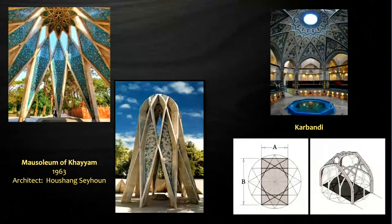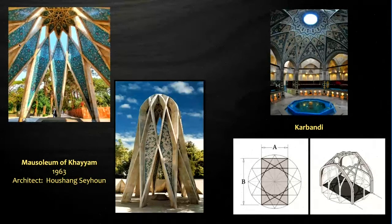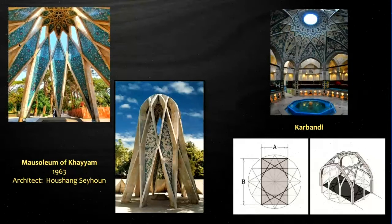In the Khayyam tomb, Sehun was evidently intent on creating an original synthesis that draws upon and evokes the past without overt mimicry. He used modern Karbandi in the mausoleum of Khayyam. Karbandi is a kind of masonry structure with a harmonic lattice geometry consisting of intersecting ribs with a stellar geometry, and it is one of the most common patterns in Persian architecture throughout history.